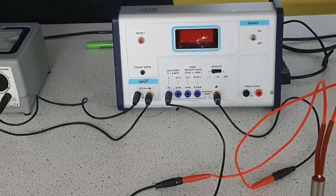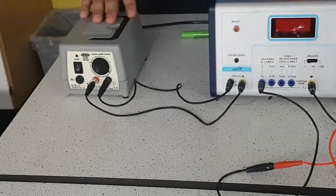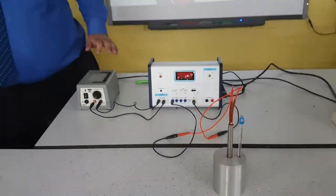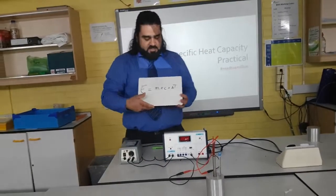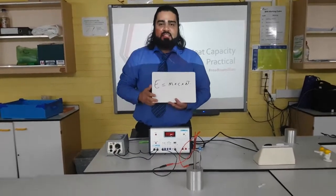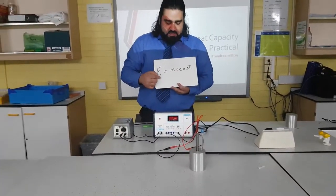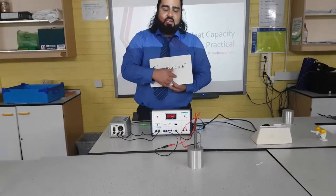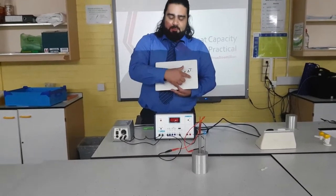Once you've done that we can switch it on. But what is the aim of the experiment? The aim of the experiment is to work out specific heat capacity using this equation: Energy equals mass times specific heat capacity times change in temperature.